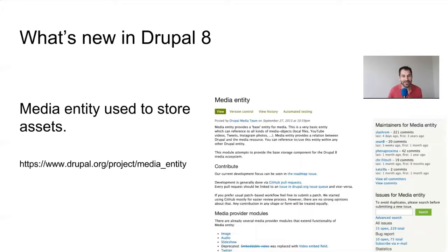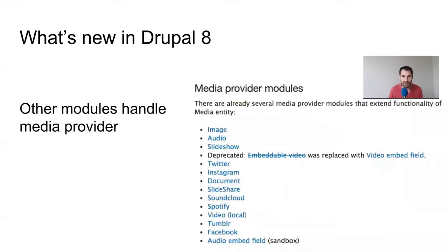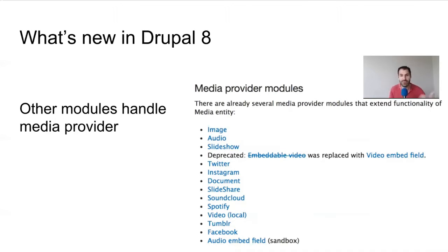So how did they break it out? There are three modules. First you have Media Entity, which is used to store assets. But the Media Entity module doesn't really do much - it just offers a base entity. If you want to handle images, audio documents, or even Twitter posts, you need to download provider modules. So for images you download the Media Entity Image module, for YouTube videos you download the Video Embed Field, and for documents or PDFs you download the Media Entity Document module.